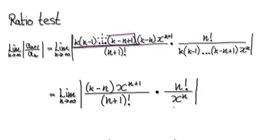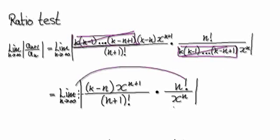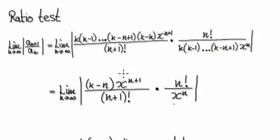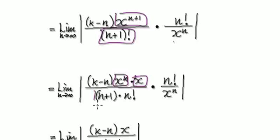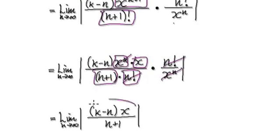This whole thing here will cancel out with this whole thing here, so these will cancel out. That will then take you to here. Then break this up as being one block multiplying another block, and these two will cancel out, giving you this.